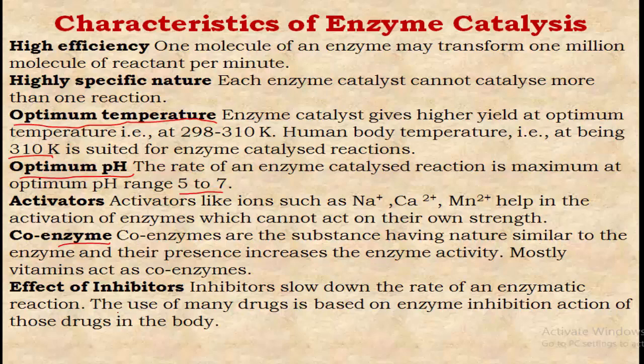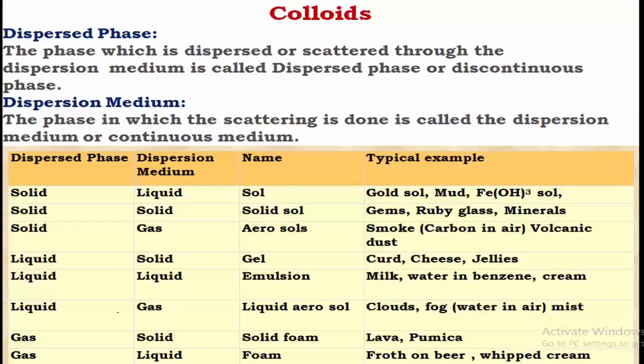Inhibitors are substances that stop or slow down enzymatic reactions, similar to poisons in general catalysis. These are some of the key characteristics of enzyme catalysis. The next major concept is colloids.